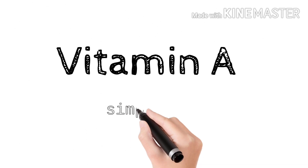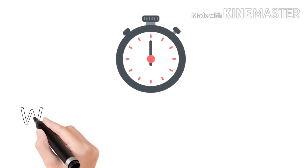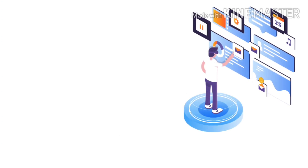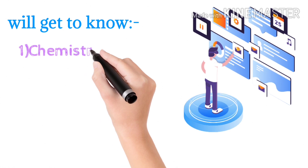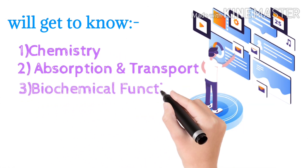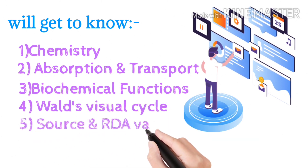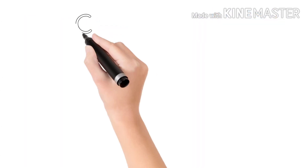Vitamin A. Today we will discuss vitamin A in a simplified way. Please watch the video completely and switch the speed according to your comfort. At the end you will get to know about its chemistry, absorption and transport, biochemical functions, Wald's visual cycle, source and RDA value. Finally, the most important topic: deficiency and toxicity. Chemistry.